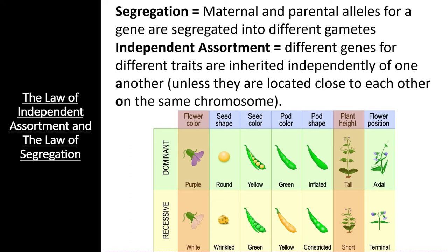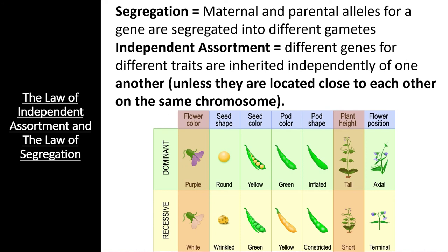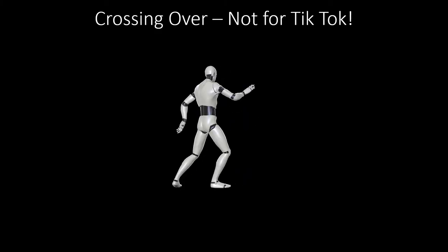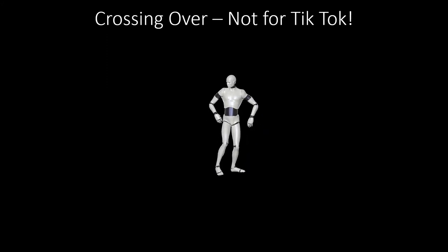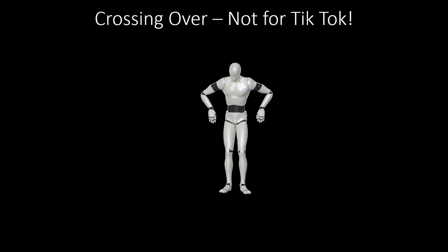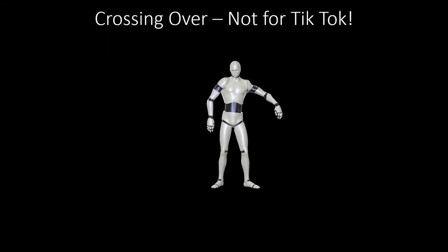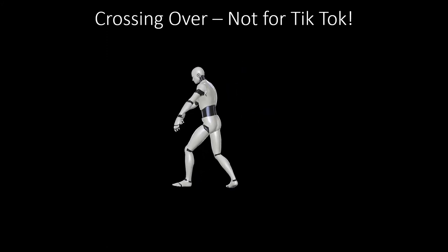A major exception to this law is genes that are located on the same chromosome, known as linked genes, due to the fact that they are physically connected. However, meiosis has one final trick up its sleeve that can separate all but the most closely related linked genes: crossing over. Now's a good time to take a quick break and stretch your legs before we dive into the process of crossing over between homologous chromosomes and how this process increases genetic diversity.